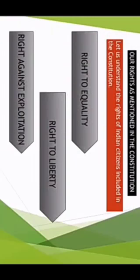Students, now let us study about the rights mentioned in the constitution. There are in total six basic fundamental rights that all of us enjoy as per the constitution. In this chapter, we will be learning about the first three. The remaining three rights will be taught in the next chapter. The first three rights are: right to equality, right to liberty, and right against exploitation.